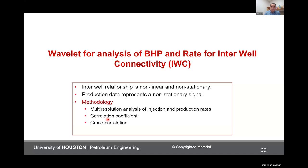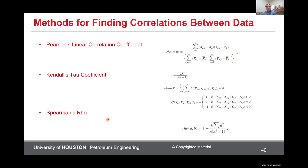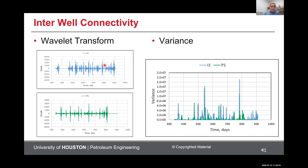These are popular techniques used for finding correlation between data — Pearson, Kendall's tau coefficient, and Spearman's rho. In our technique, we apply wavelet transform for pressure/injection and for producer/injector relationships. Looking at them in time placed on top of each other, you see there are correlations with a gap, because when you see a change in the injector, it takes some time for that change to reach the producer. You can see correlations between producer and injector.